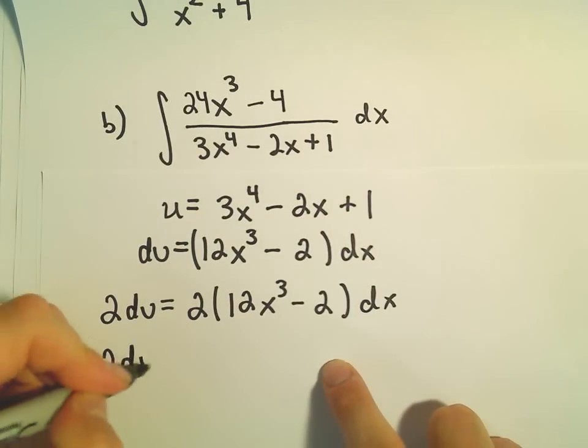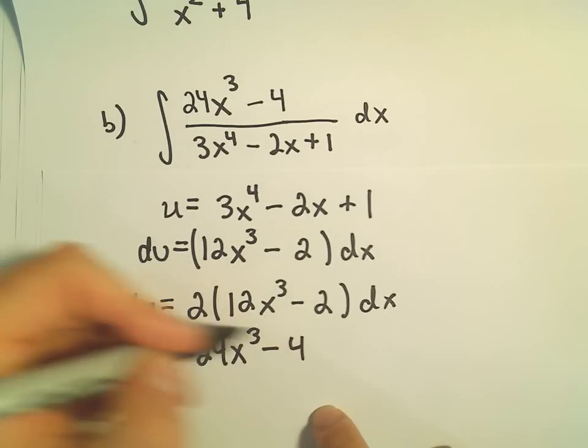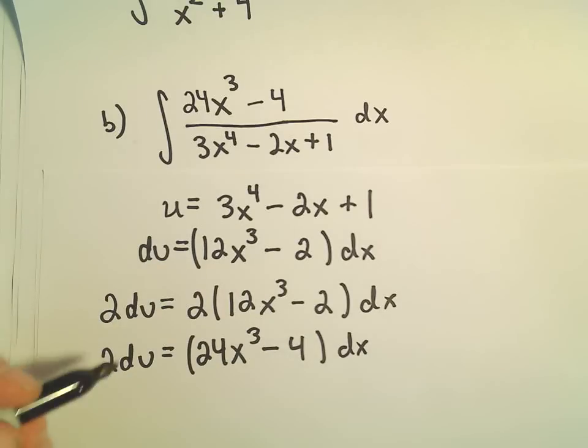Well, now it says that 2du, and if we distribute, that would give us our 24x to the third minus 4 dx, just like we want. So now we can do our u substitution.